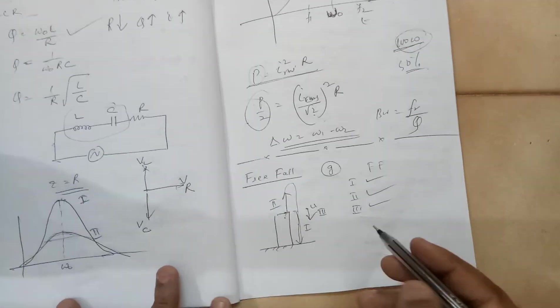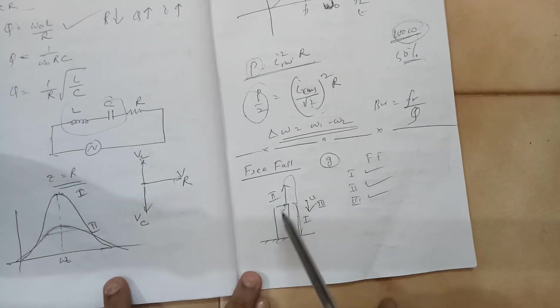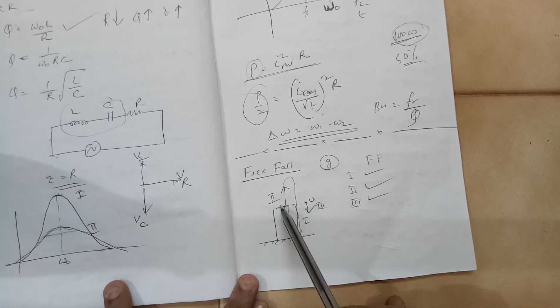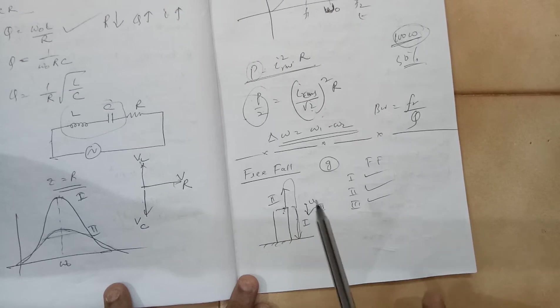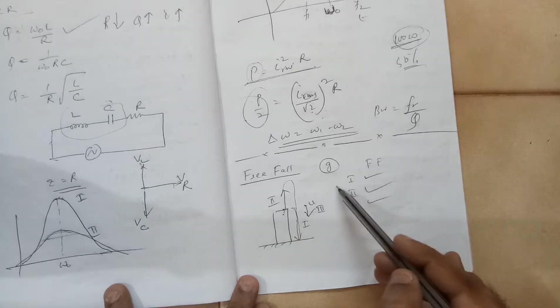There is no other force acting on that except the gravitational pull of the earth. To explain this, let us take three cases. There is a building and from the top of the building, you just release the ball. This is case 1.